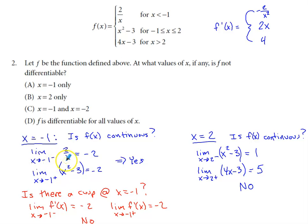So at negative one, I'm checking the limit as I approach that value. On the smaller side, I would be dealing with the top part of the definition of this function. Two over negative one gives me a limit of negative two.